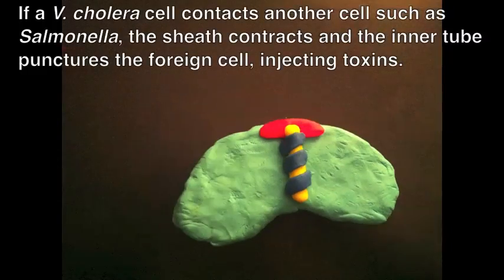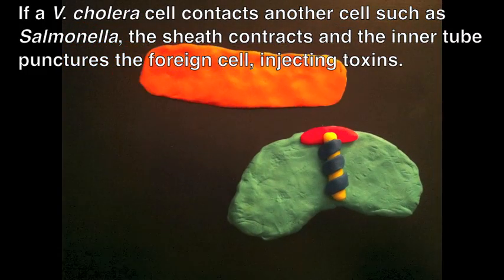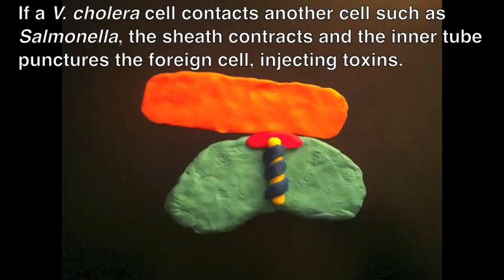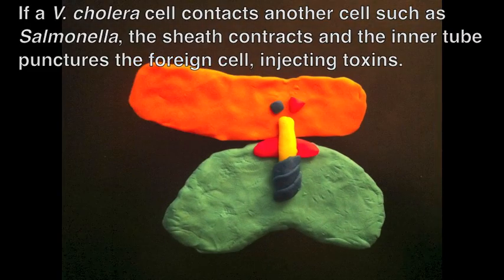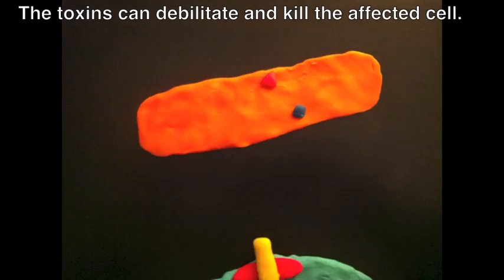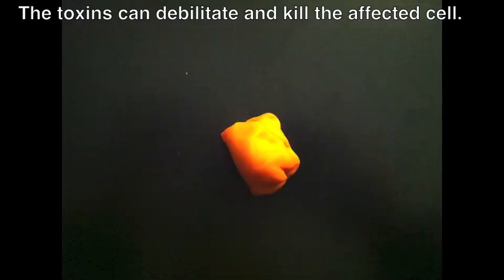Upon contact with another cell, the sheath can contract, causing the inner tube to puncture the foreign cell and inject toxins. The toxins can debilitate or kill the affected cell.